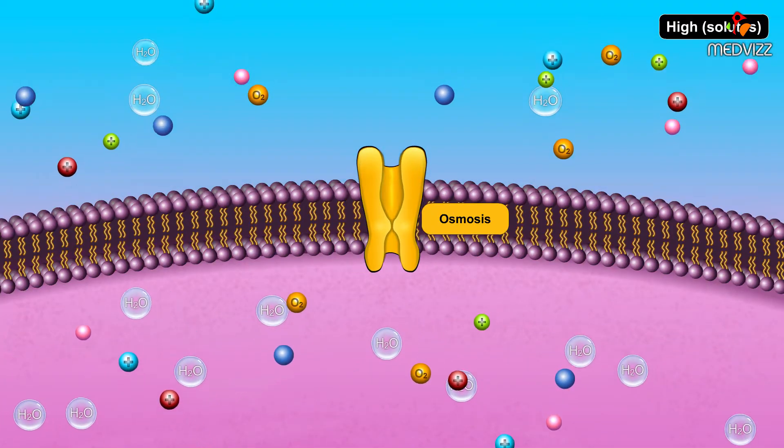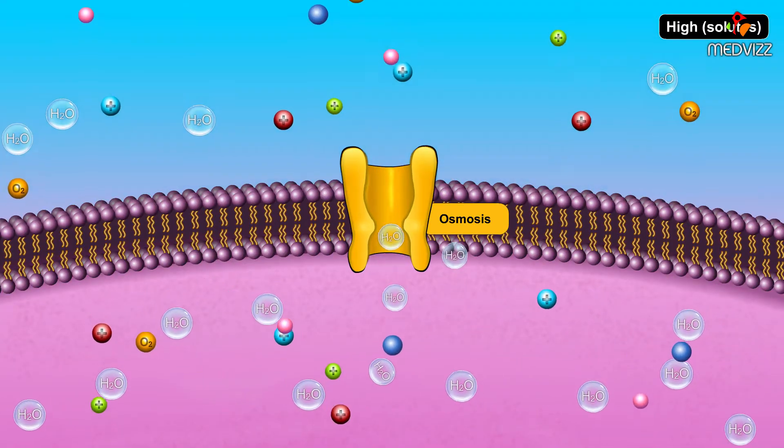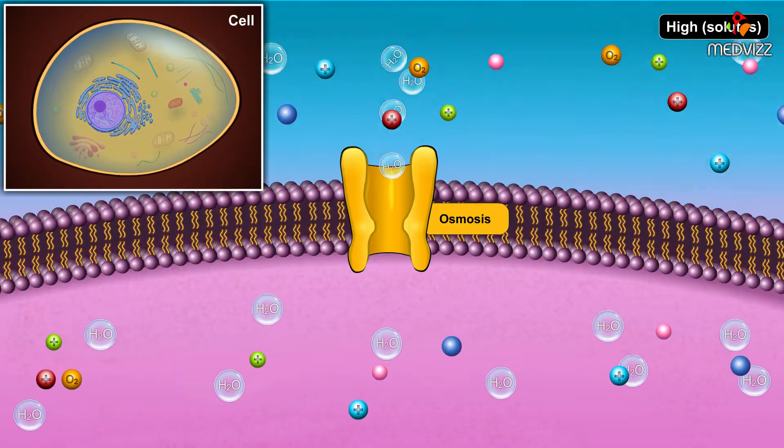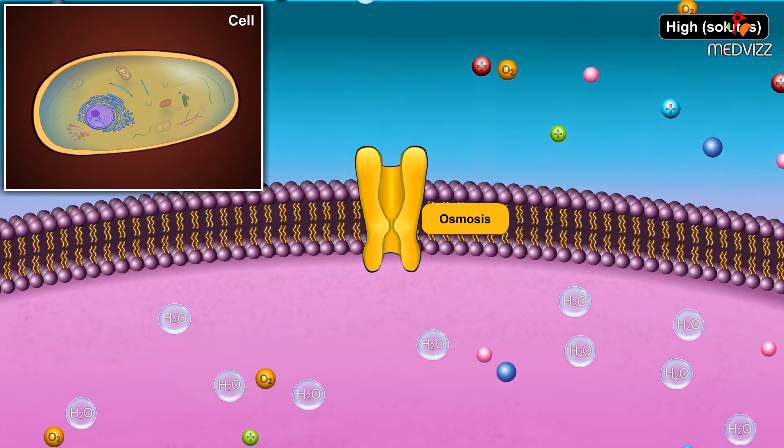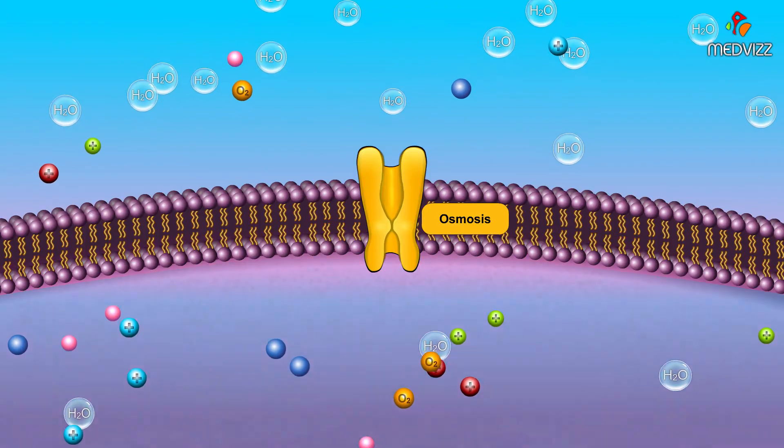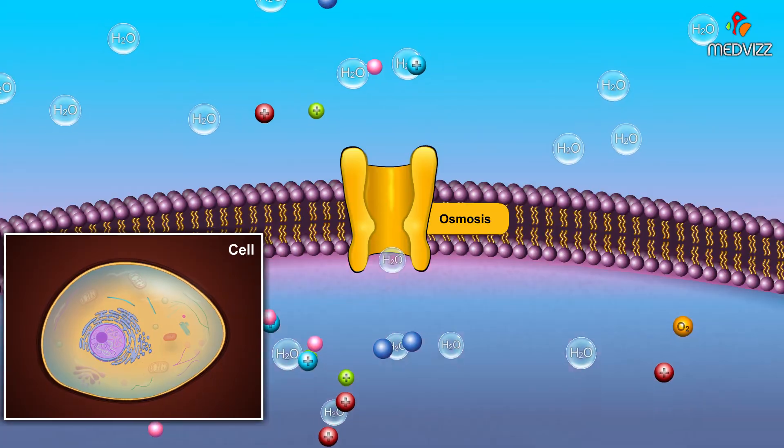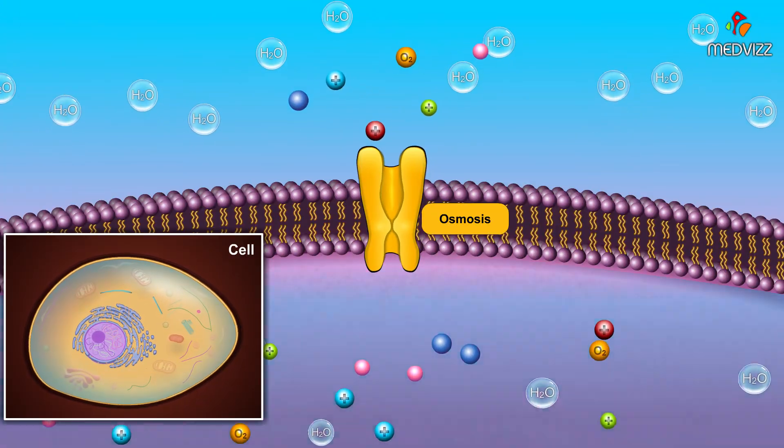If the concentration of solutes outside the cell is high compared to the concentration inside the cell, water may leave the cell, causing the cell to shrivel up. Similarly, if the concentration of solutes inside the cell is high relative to the outside, water may move into the cell and can cause it to swell up and possibly burst.